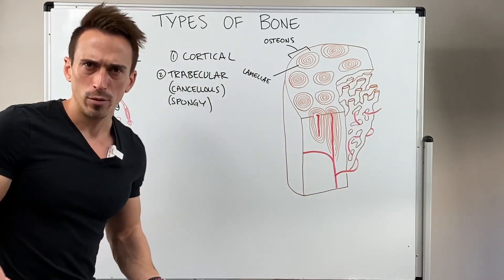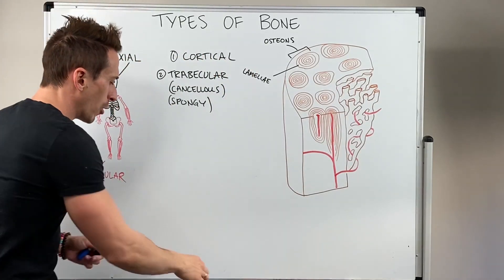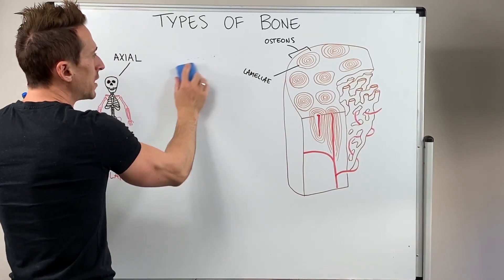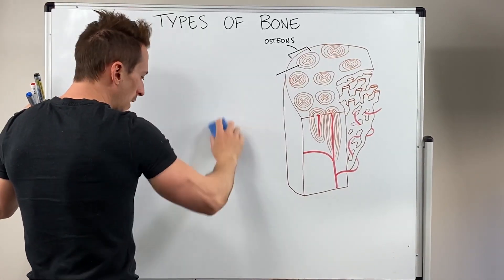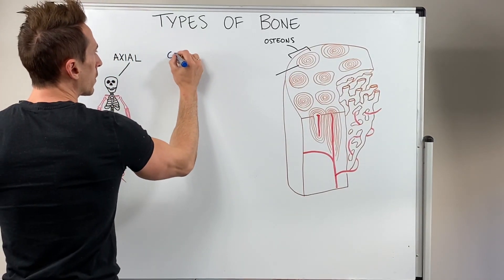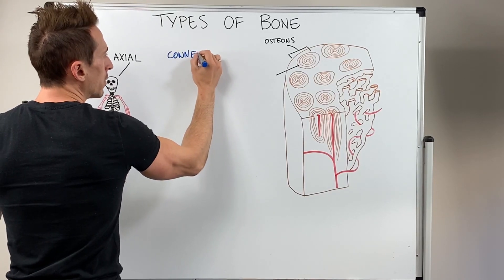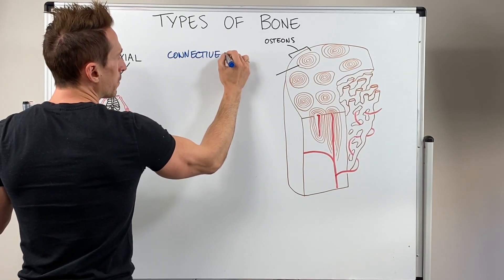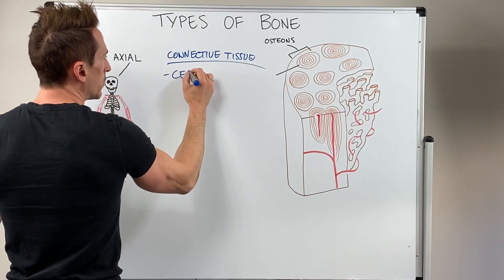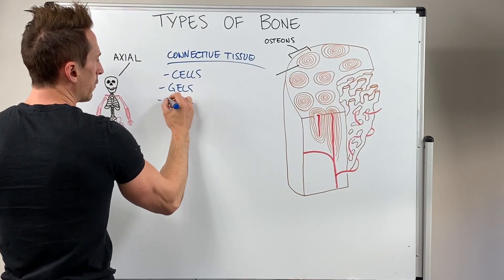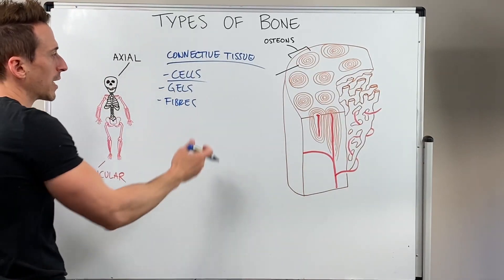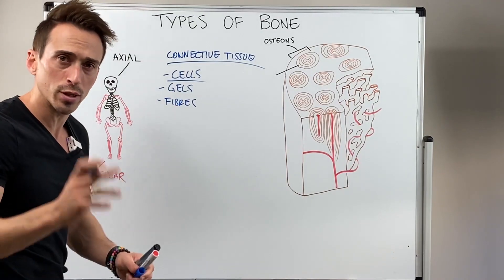How do we make bone? Bone is made by a number of different cell types. Bone is connective tissue — really important. And because bone is connective tissue, it's made up of cells, gels, and fibers. It's the cells that are important because they lay down the gels and fibers and produce them.